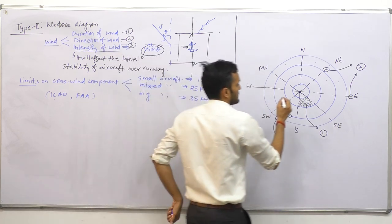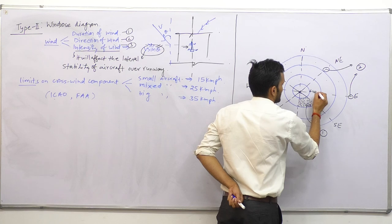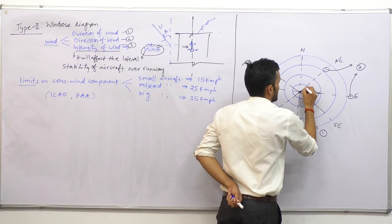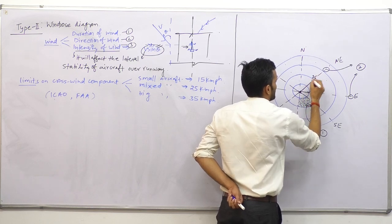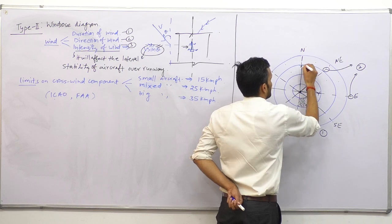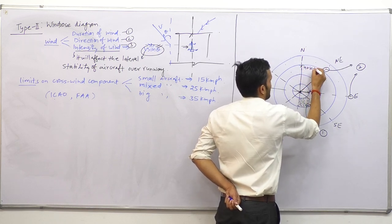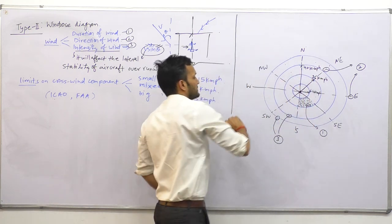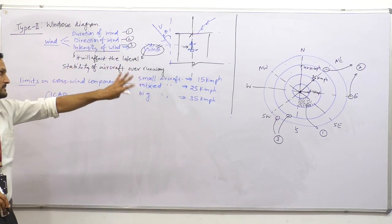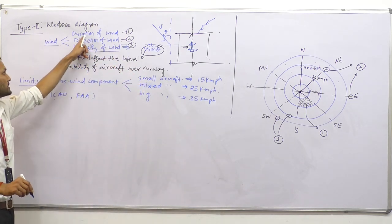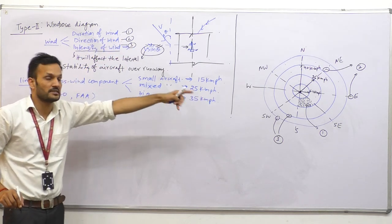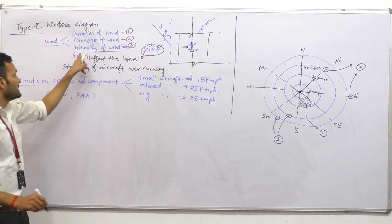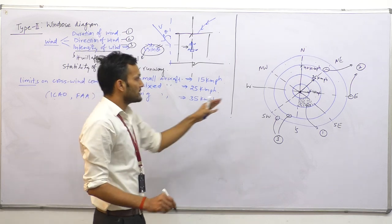To make it clear: the radius of the first circle is 6.4 kmph, the radius of the second circle is 25 kmph, and the radius of the third circle is approximately 40 kmph. There can be multiple concentric circles. So the three parameters in the Wind Rose diagram are: duration — depicted by sectors, direction — depicted by radial lines, and intensity — depicted by the circles.